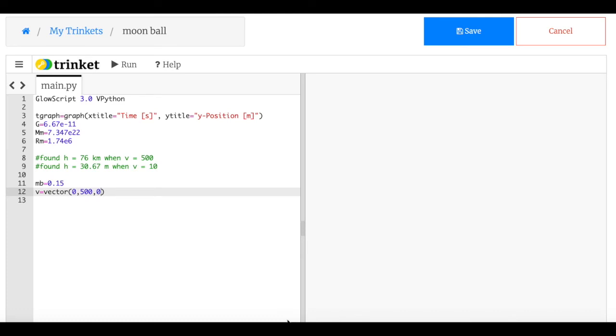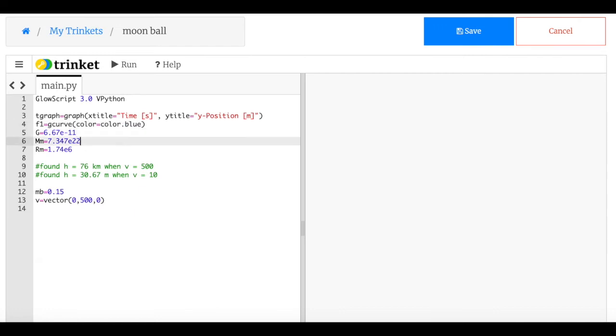Okay, I know I got started without you. I apologize. But I was just very excited. So let me put some things in here. Let's just go over what's here already. This is just to make a graph. And I need to add another thing, f1 equals g curve, color equals color.blue. And then I have the gravitational constant, mass of the moon, radius of the moon. Here's some notes here. These are just the notes, because when I launch it at 500 meters per second, I got 76 kilometers, I just want to check. Then I have the mass of the ball, and the velocity of the ball. So now I need the momentum of the ball. So p equals mb times v.